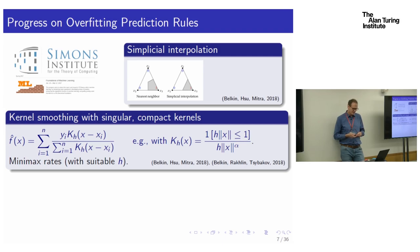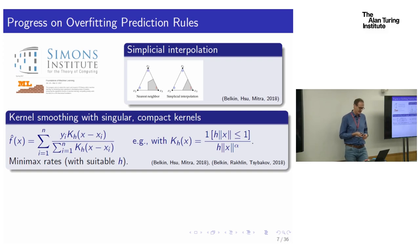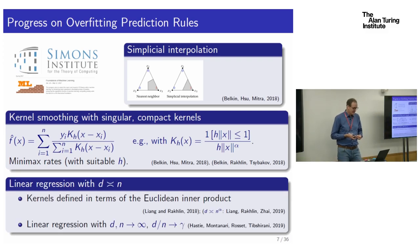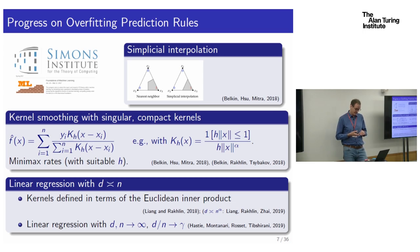With these methods, for a suitable choice of kernel bandwidth, you get minimax rates. There's also been work on linear regression in a bunch of directions over the last two years — notably work by Tengyuan Liang and Sasha Rakhlin, and results from Hastie et al. using random matrix theory machinery to understand what happens as dimension and sample size go to infinity together.